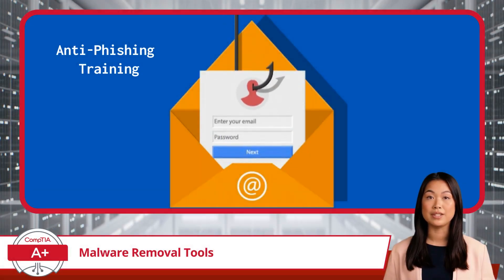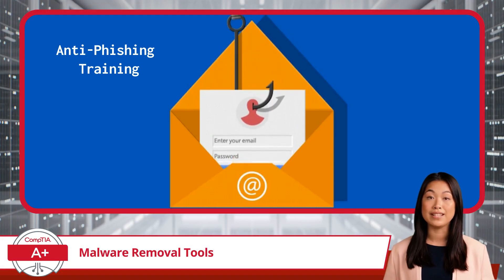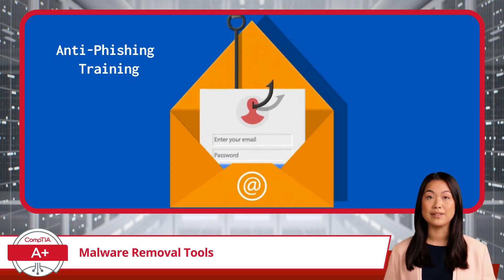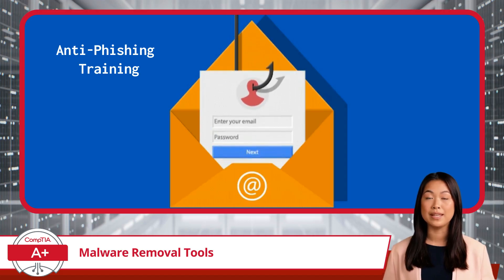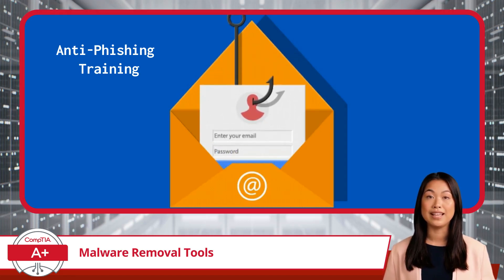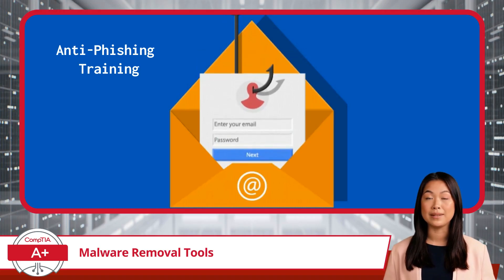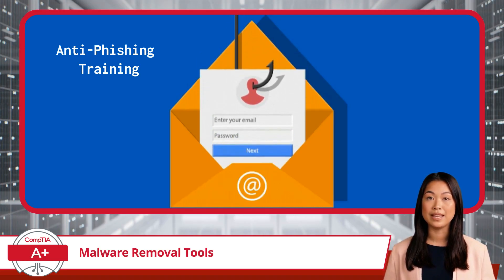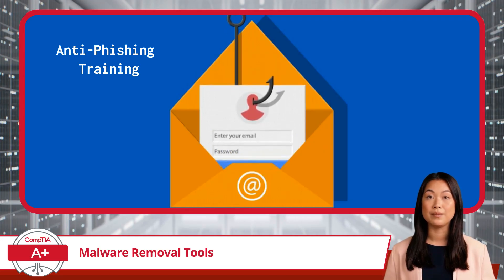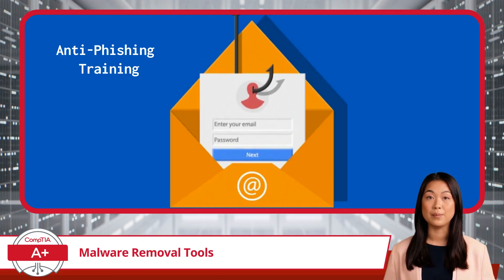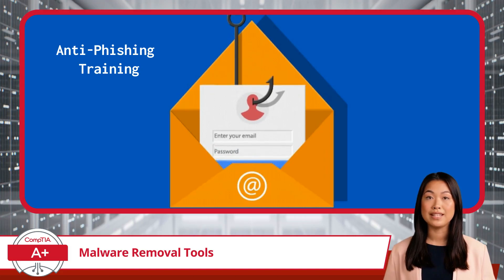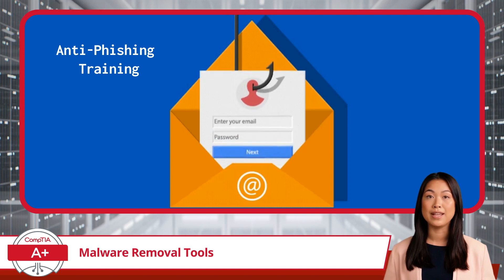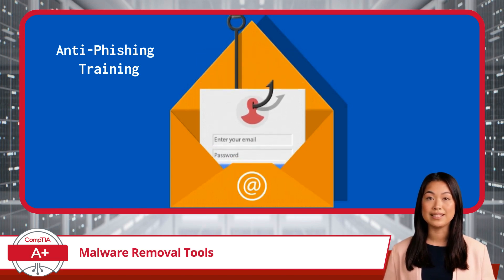Anti-phishing training helps users identify deceptive emails that could lead to malware infections. Management teams are often concerned that employees might open these malicious messages and infect the entire network. By educating staff to spot suspicious emails, double-check the sender's address, and avoid clicking on unknown links, you can significantly reduce the risk of a phishing attack. But what happens if malware manages to get in anyway, especially in the form of a rootkit? This is where drastic measures, like OS reinstallation, might be necessary.